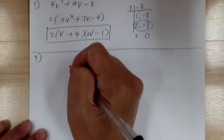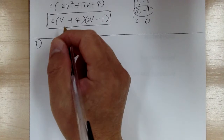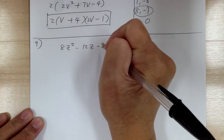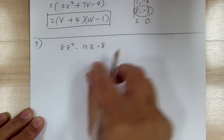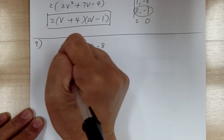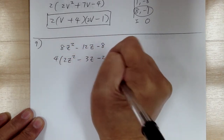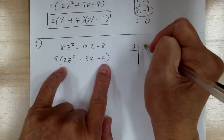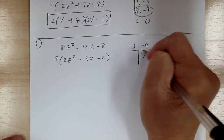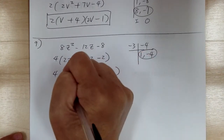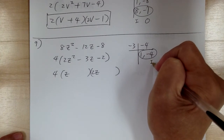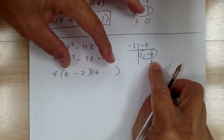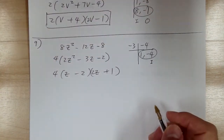Number 9. You have 8z squared minus 12z minus 8. Step 1, factor out the common factor — factor out the 4. So you get 2z squared minus 3z minus 2. Then check your steps. Master product: minus 3 and minus 4. Go 1, negative 4 — that's the one already. Break it down to z and 2z. This would be the inside, times minus 2. 2 times negative 2 gives you negative 4, that's the inside. The outside, you need plus 1. And that's it.